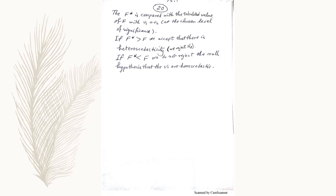The calculated F is compared with the value of F with the same degrees of freedom for numerator and denominator at the chosen level of significance. If F star is greater than F, we accept that there is heteroskedasticity. We reject H0. If F star is less than F, we do not reject the null hypothesis that the u's are homoskedastic.